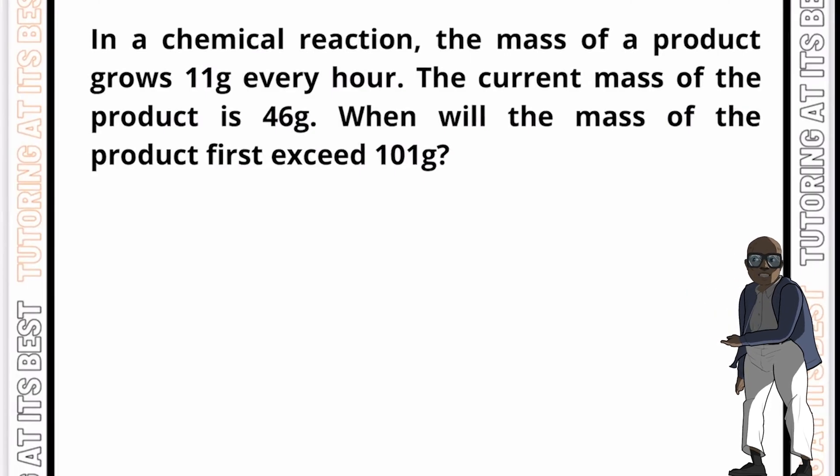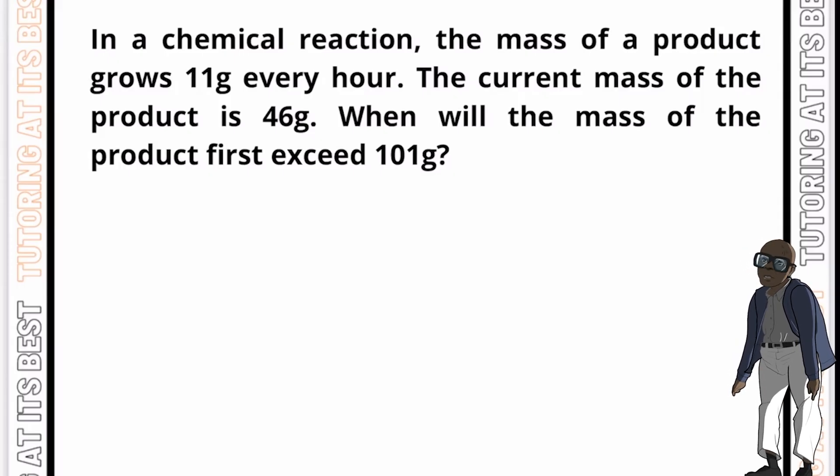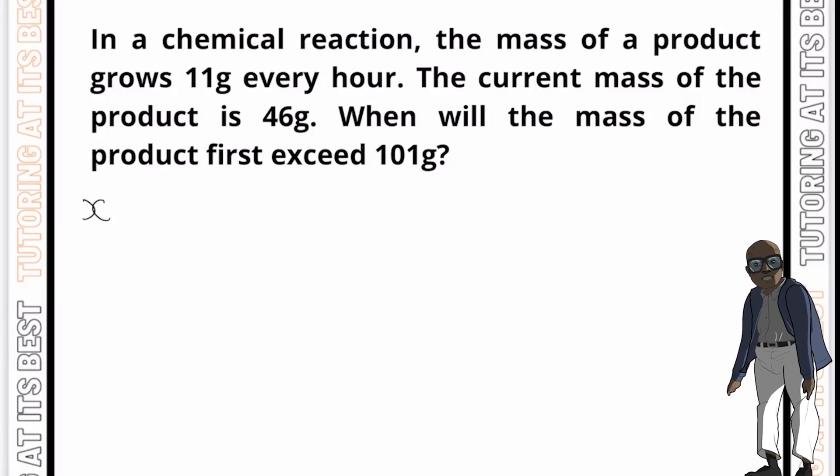In a chemical reaction, the mass of a product grows 11 grams per hour. The current mass of the product is 46 grams. So when will the mass of the product first exceed 101 grams? So what do we do? We'll start off by defining our variable. And x is going to be the number of hours that have passed since the current mass of the product was 46 grams. So we can write hours passed.